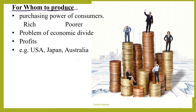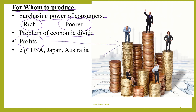For whom to produce: in a market economy, producers produce goods and services for those people who are able to offer a higher price. By considering the purchasing power of consumers they decide for whom to produce. Usually they produce goods and services for rich people and neglect the poorer section of the society. In the market economy they always try to maximize profit and produce for those who are able to pay. Good examples of market economies are USA, Japan, and Australia.